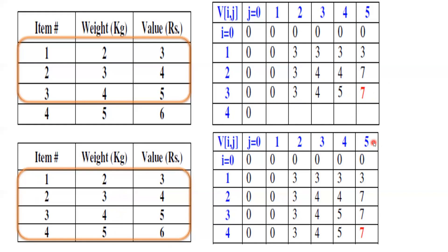Considering all four objects with capacity five: placing only object four gives a profit of six. Combining object three and object four exceeds five. Combining object two and object four is also not possible. The only valid combination is still object one and object two, giving profit seven. No better combination is achievable, so the finalized matrix value remains seven. You can verify the matrix elements using the formula discussed in the previous session.